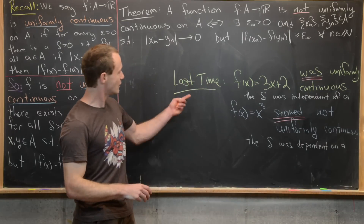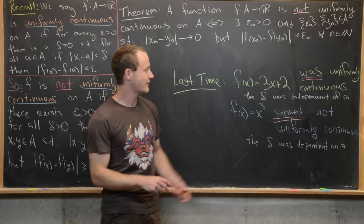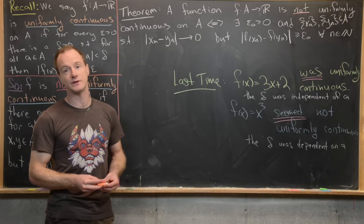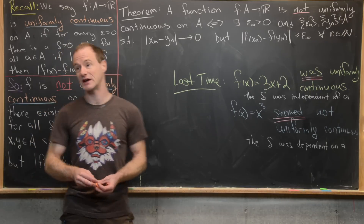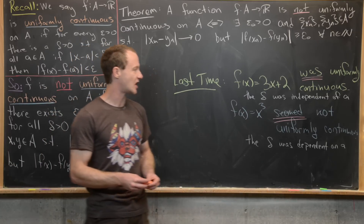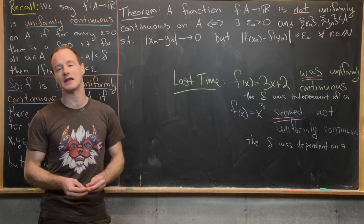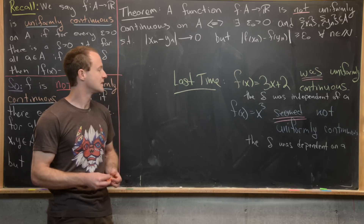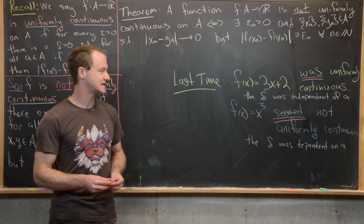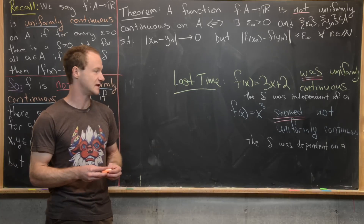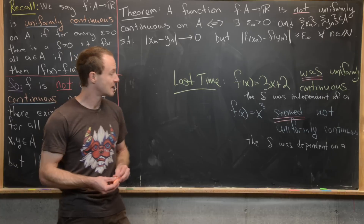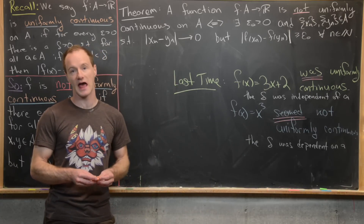Last time we proved that f(x) = 3x + 2, a linear function, is uniformly continuous on all real numbers by showing the definition was satisfied. Along the way we saw that delta was independent of the point a. We also saw that f(x) = x³ seemed not to be uniformly continuous — we did not prove this, but it seemed so because delta depended on a.